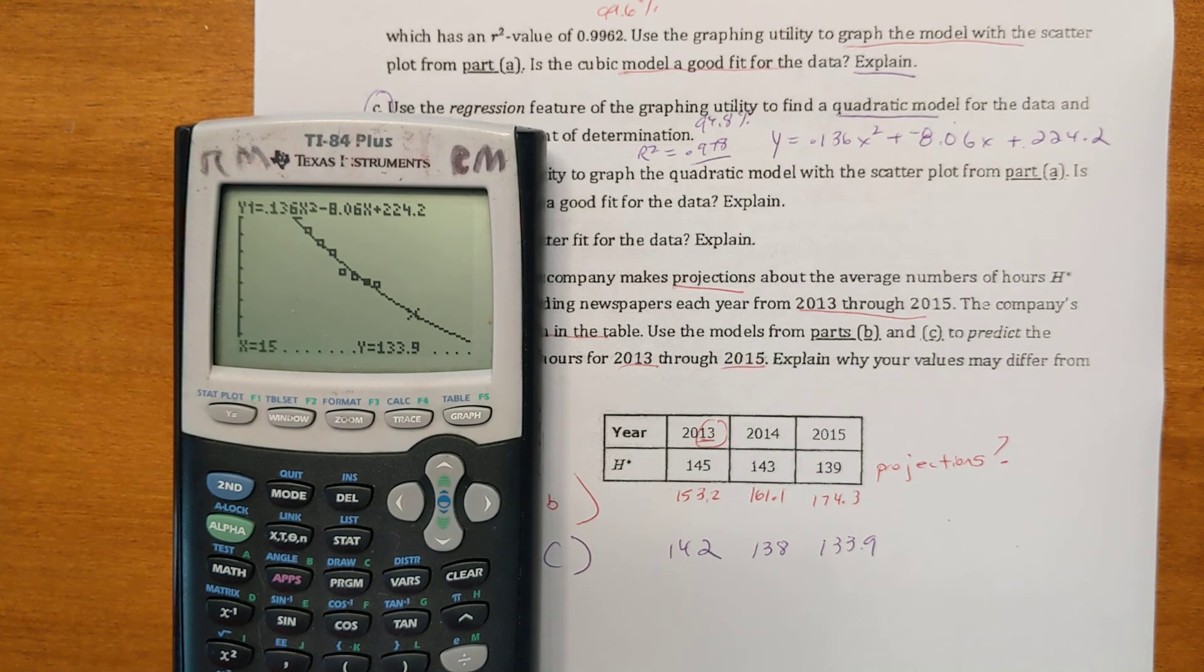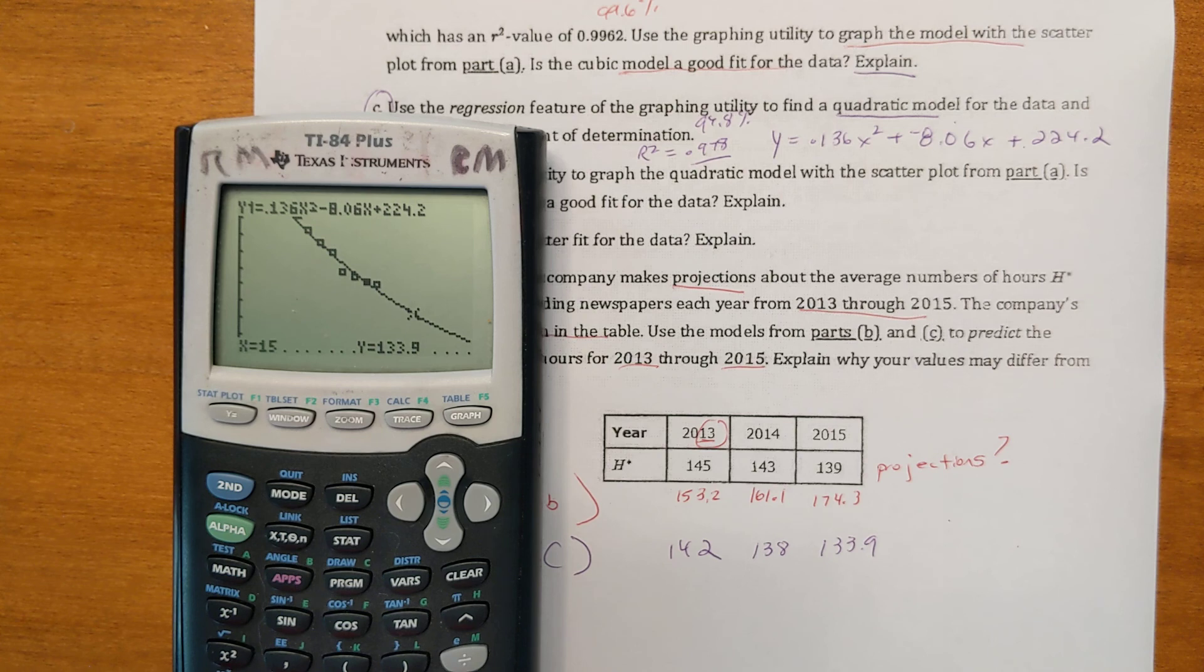So why are our numbers different than their models? I don't know what they did for their projections. They're just guessing at it too. Our numbers, I don't know, they're a little bit different than theirs. It's hard to say without honestly knowing what they did. I'll see you for the next lesson. And hi, Mary. If you're joining me here, Mary said that she was going to be watching this. I made this for her. You have a good night. We'll see you next week. Bye.